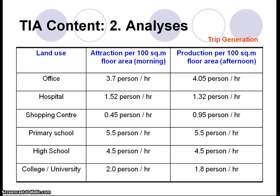We analyze trip generation based on trip rates. This is an example of a trip rate published by CTL Kuala Lumpur in their 1995 study. For example, office space will attract about 3.7% per hour per 100 square meters of floor area in the morning, hospital attracts 1.52%, and primary school 5.5% per hour per 100 square meters floor area. In the afternoon, office generates 4.05% per hour per 100 square meters.